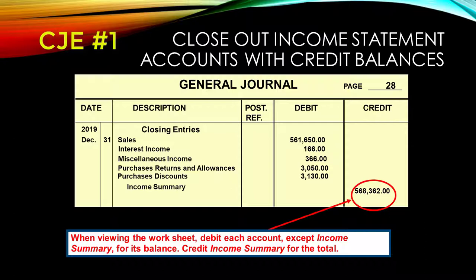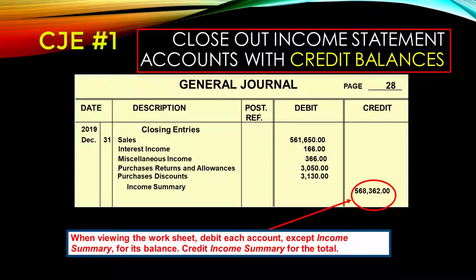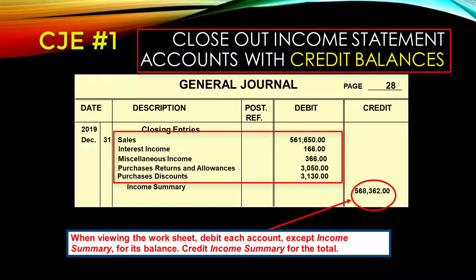Because we have a lot of merchandising accounts with credit balances, it's no longer adequate to remember this first closing journal entry as just 'close the revenues,' as we did for a service-oriented firm. We need to think about it differently. In this first closing entry we will close out all income statement accounts that have credit balances. As always, closing is a game of opposites — we will debit individually each one of those accounts and have one big credit to income summary.